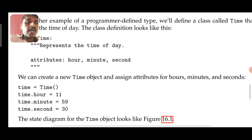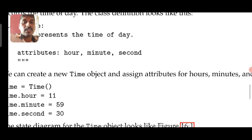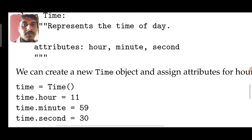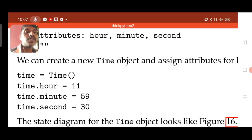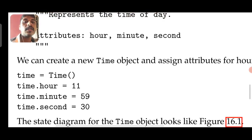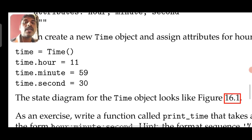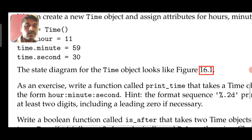We can create a new Time object and assign its attributes as follows. Here is the object creation step where Time (capital T) is the name of the class. Time equal to Time of open and closing bracket signifies the object creation step. Next, attributes are initialized: hour is initialized to 11, minute to 59, and second to 30 using the dot operator — time.hour, time.minute, and time.second are the three attributes of class Time.